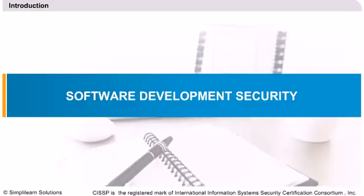The Software Development Security domain refers to the controls that are included within systems and application software and the steps used in their development — for example, STLC. Software refers to system software, operating systems, and application programs such as agents, applets, software, databases, data warehouses, and knowledge-based systems. These applications may be used in distributed or centralized environments.